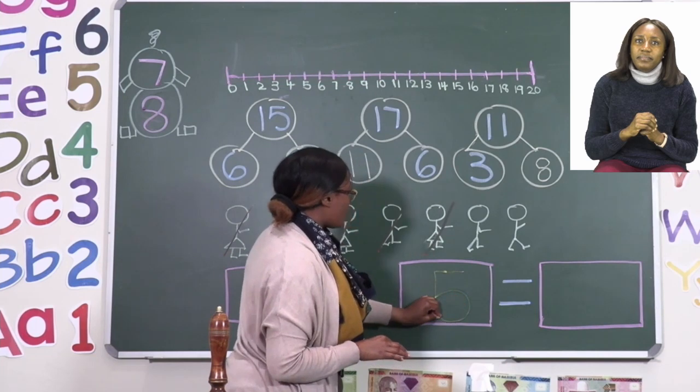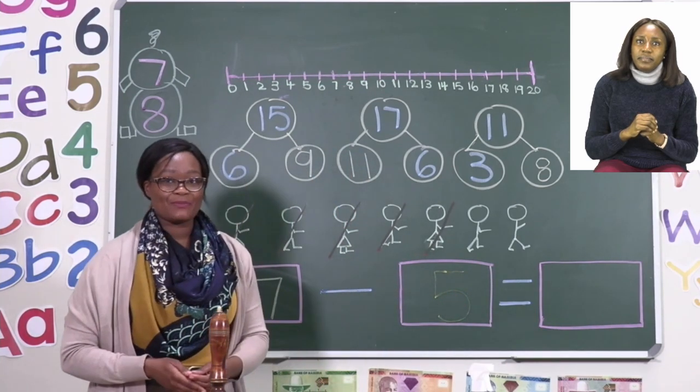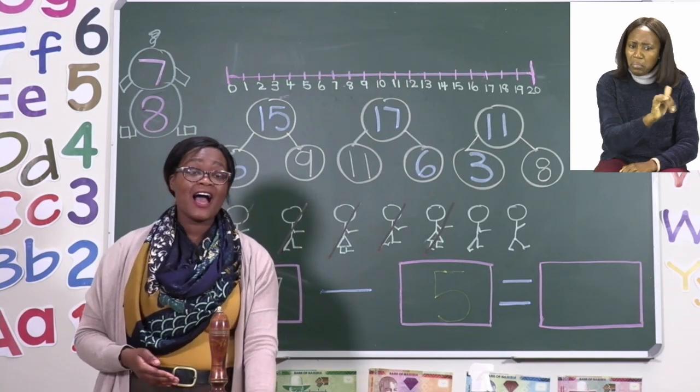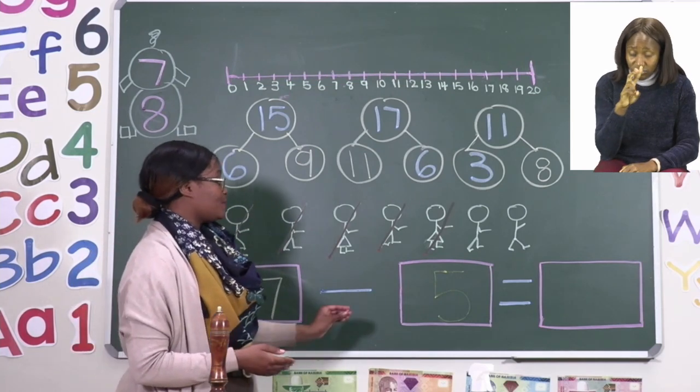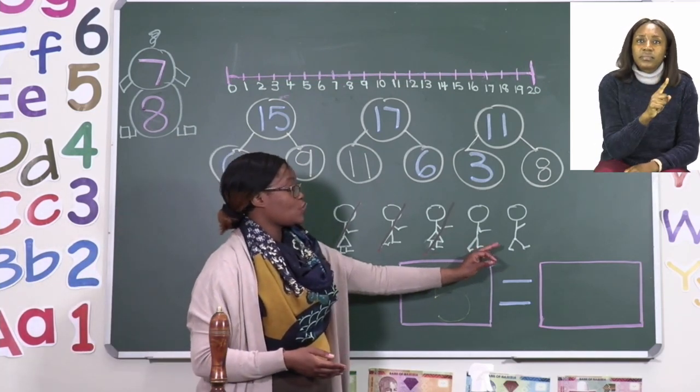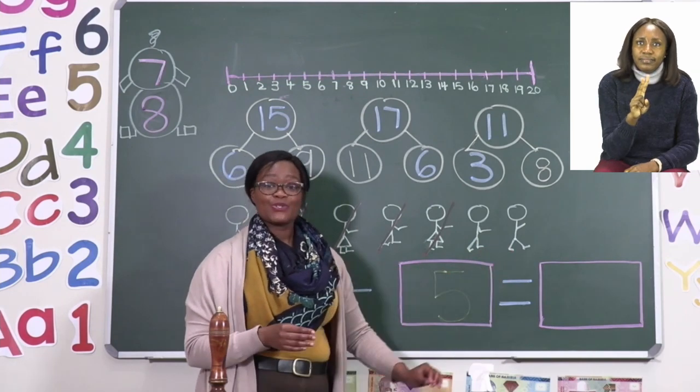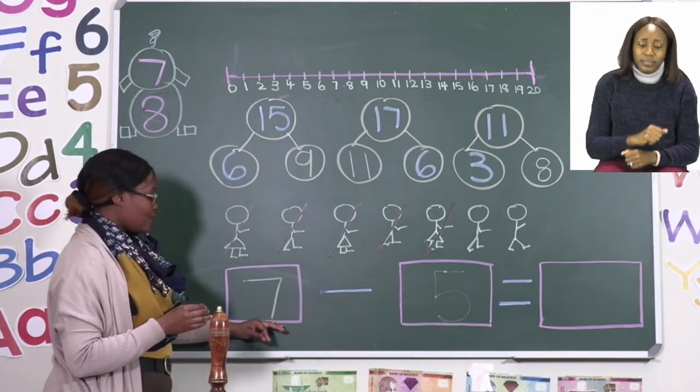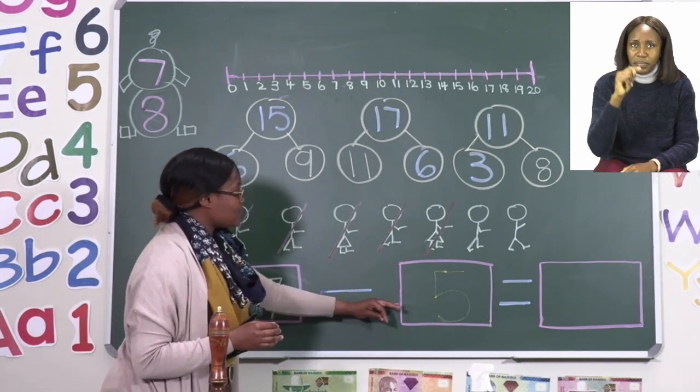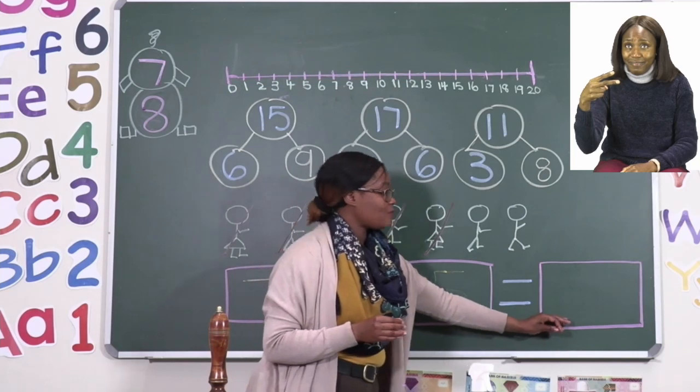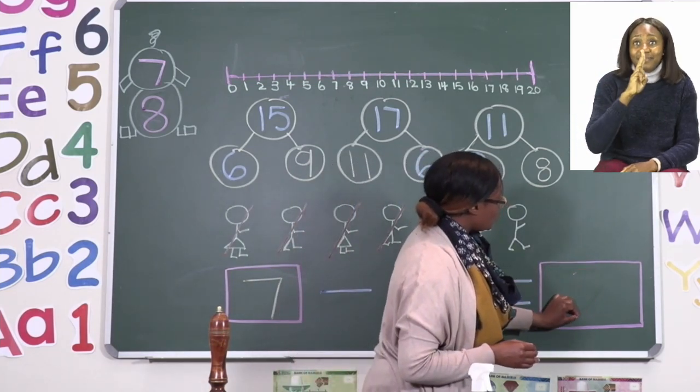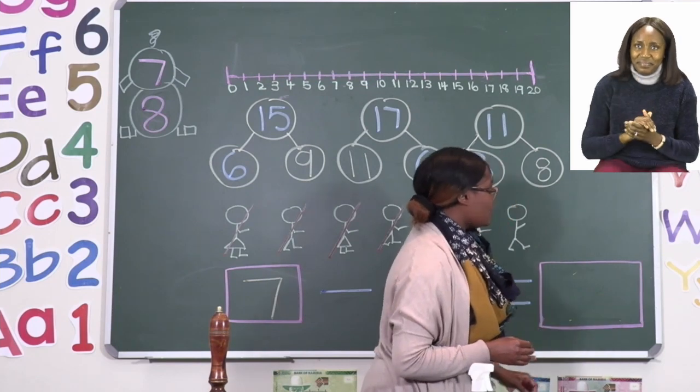Now our job is to find out how many people are left. So we need to count how many people are left. 1, 2, 2 people are left. Which means that if we say 7 minus 5 will give us 2. So our answer is 2 people are left.